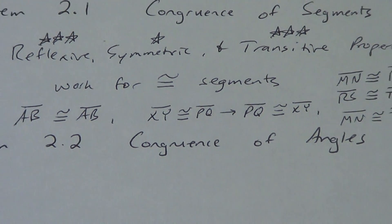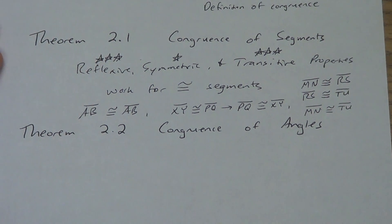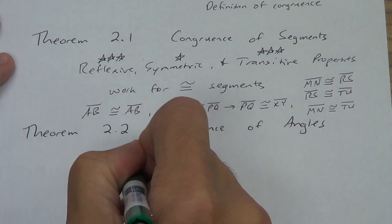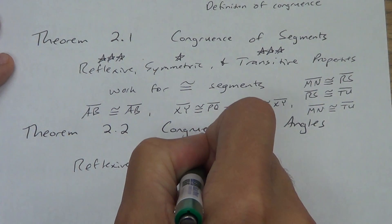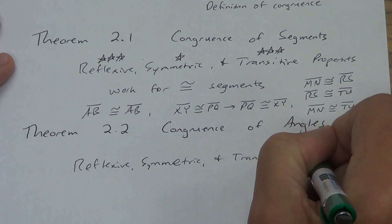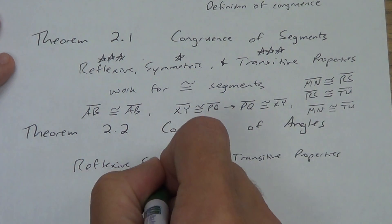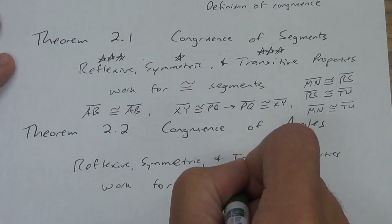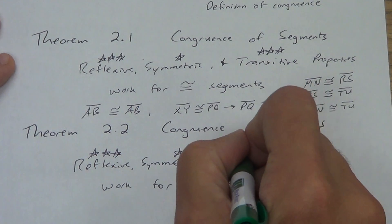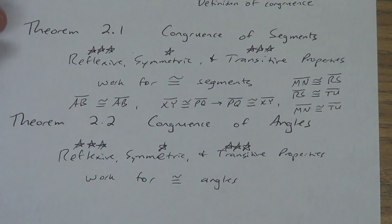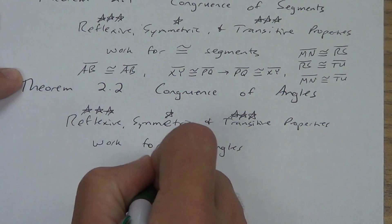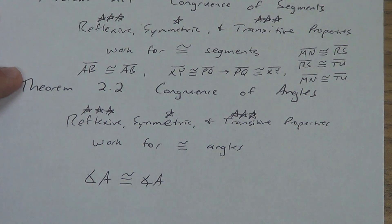And then the next theorem, theorem 2.2, says that those properties — reflexive, symmetric, and transitive — work for congruent angles. Same thing. Reflexive is really important; we use it a lot. Symmetric, we hardly ever use. Transitive, we use a lot. So let's talk about reflexive real quick: angle A is congruent to angle A. That's reflexive.